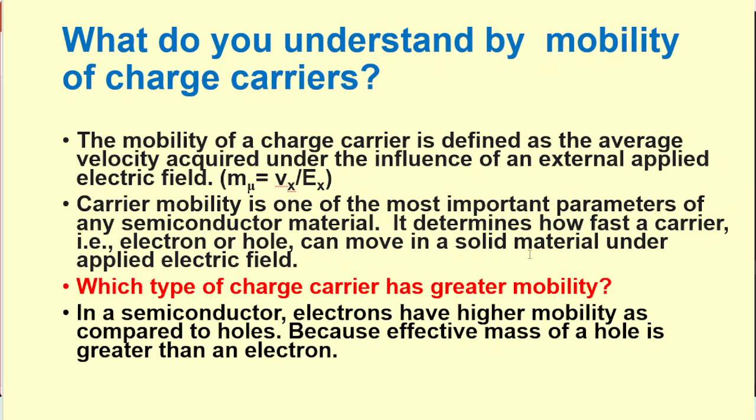What do you understand by mobility of charge carriers? The mobility of charge carriers is defined as the average velocity acquired under the influence of an external applied electric field, and mu equals vx by Ex. It is one of the most important parameters for any semiconductor material, and it determines how fast a carrier, such as electron or hole, can move in a solid material under applied electric field. So which type of charge carrier has greater mobility? In a semiconductor, electrons have higher mobility as compared to holes because effective mass of a hole is greater than an electron.